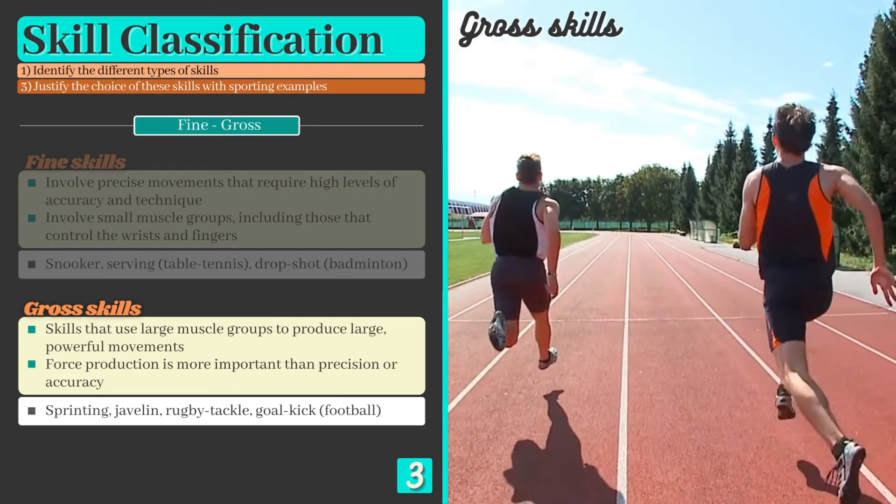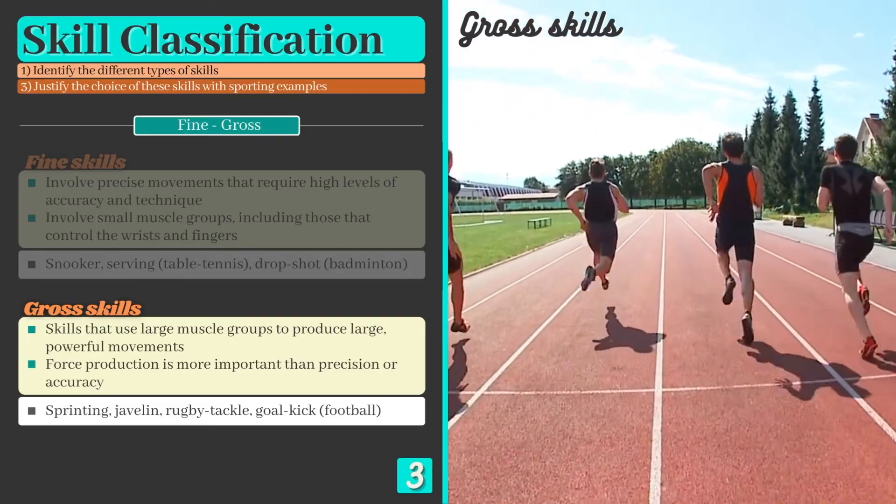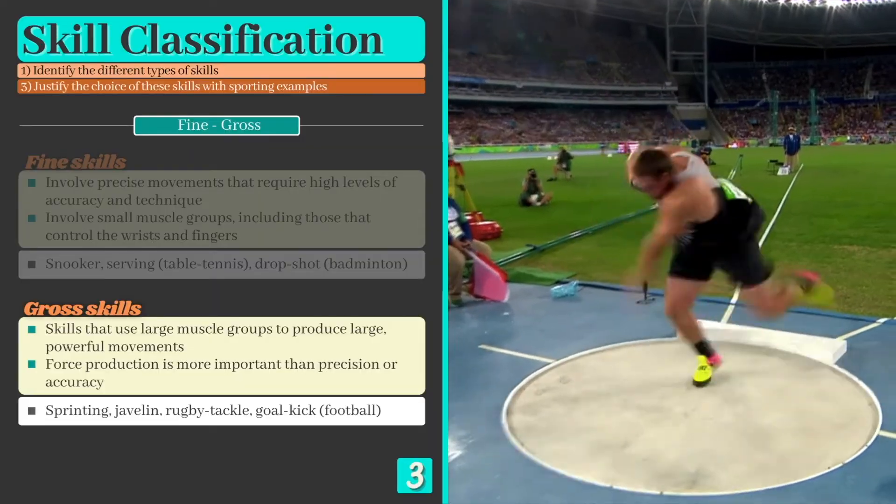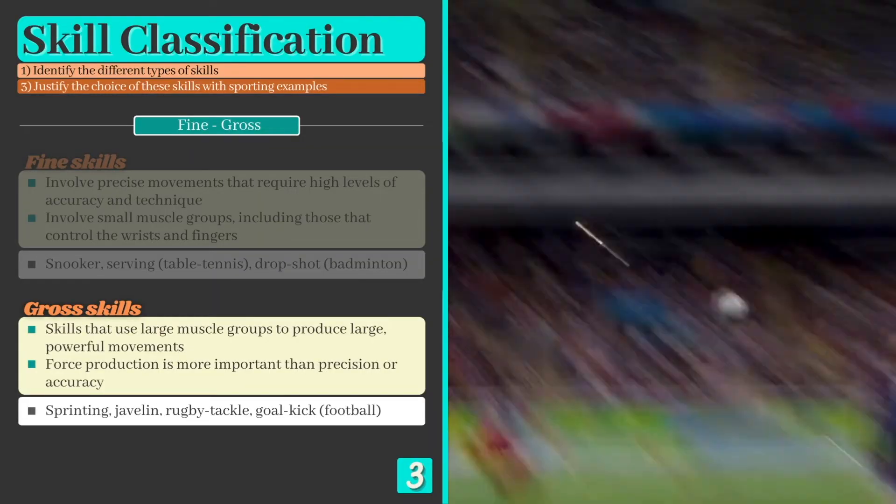Conversely, gross skills use large muscle groups to produce large powerful movements. Force production is more important than accuracy here and examples include events such as the shot put or long jump.